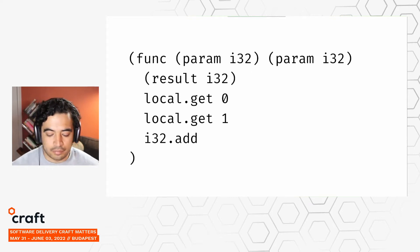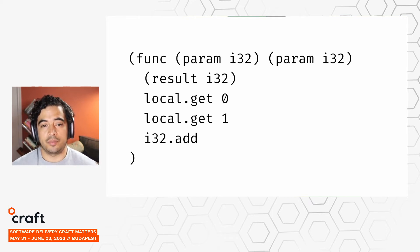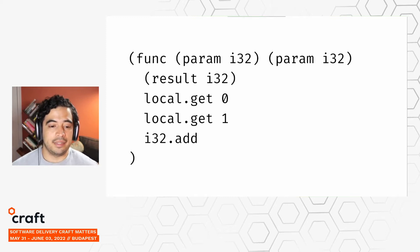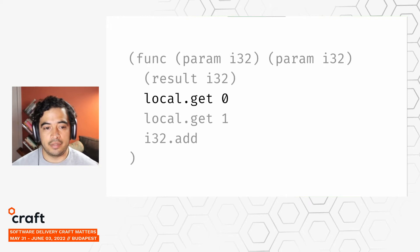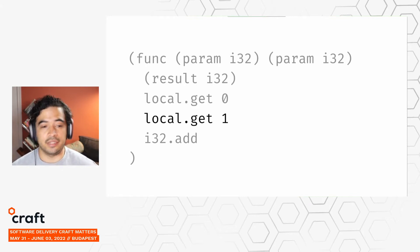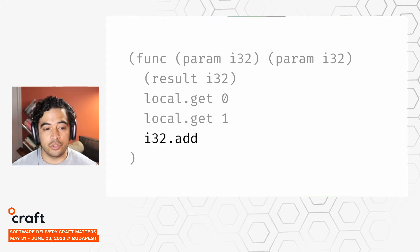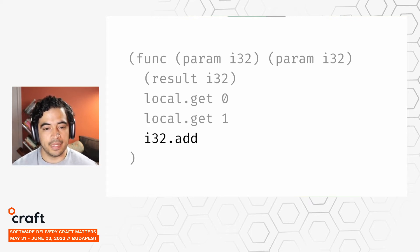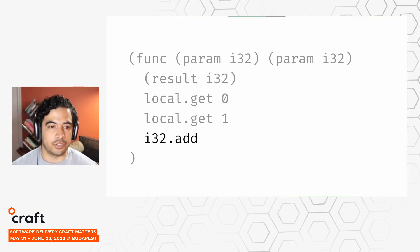WebAssembly is intended to be executed by a stack-based virtual machine. Here's a function that takes two params, returns one param, and performs an add. When we run this, first a local.get emits the first param onto the stack, then the second local.get puts the second param onto the stack, then we perform an I32 add — this pops the previous two elements from the stack, performs the add, and pushes the result onto the stack, which is the return of our function.